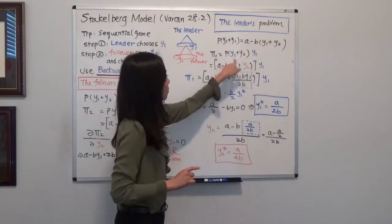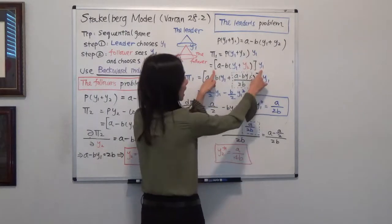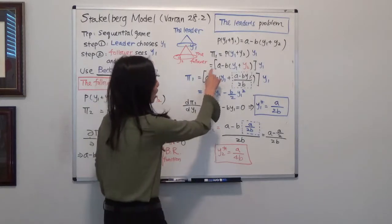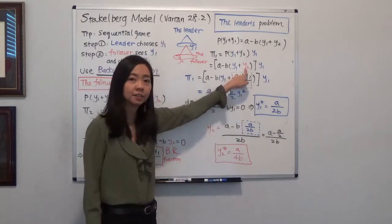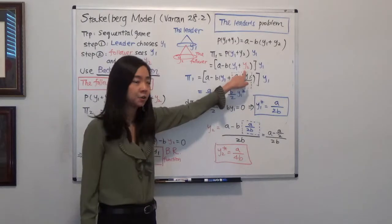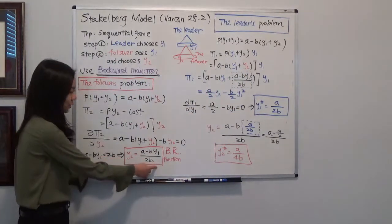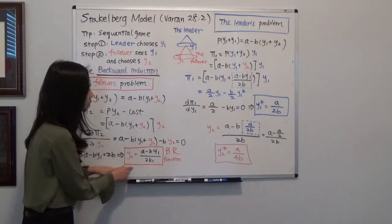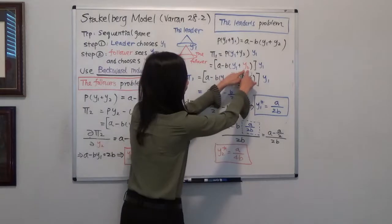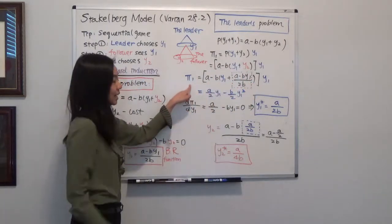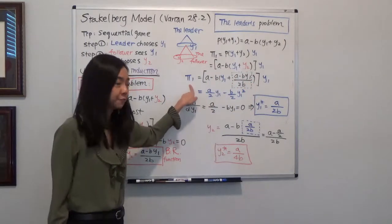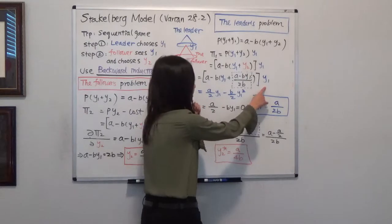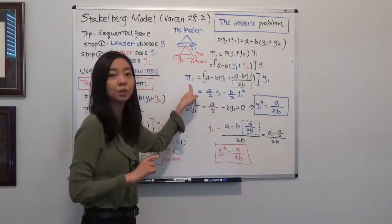Here is our price. Price is that function times our quantity is Y1. Notice that our price function has Y2 in there. But firm one already knows that Y2 is going to be equal to this animal here. So we are just going to plug in this Y2 in here and get this function. So here is our profit function. Our profit function is equal to price times quantity. Remember we don't have cost. So our profit is just equal to our revenue.